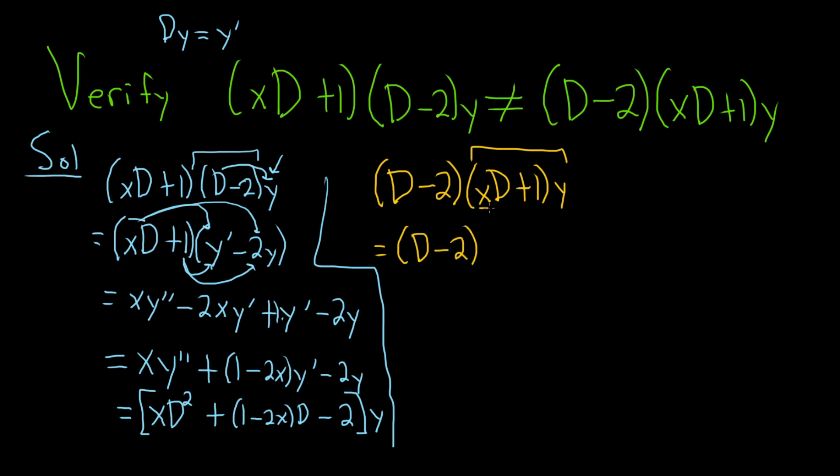So xD is being applied to y. So that's going to give us xy prime. And then 1 is being applied to y. That just gives us y. We're just multiplying. Whenever it's a number, you just multiply.